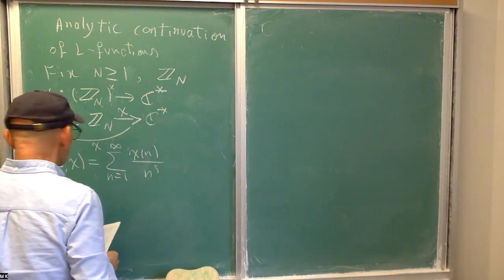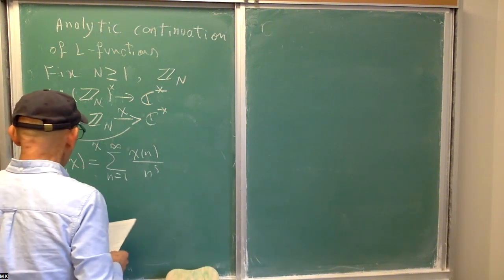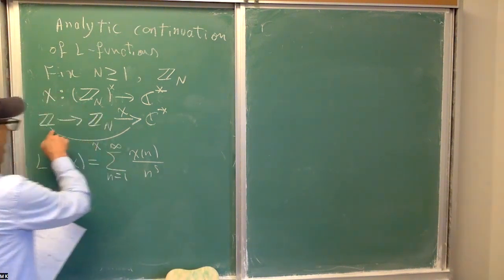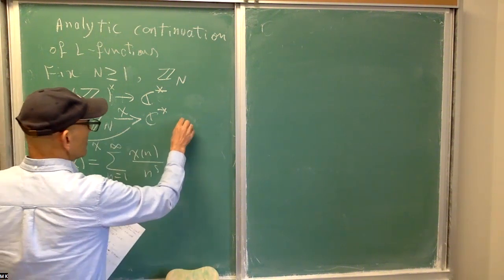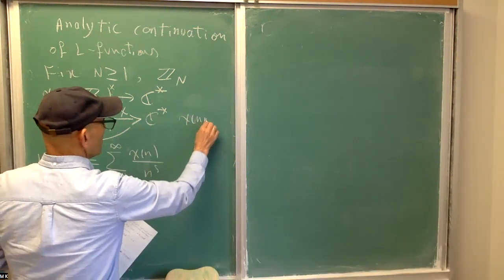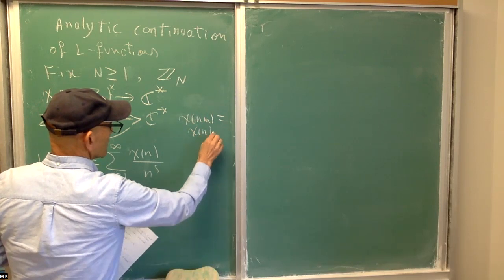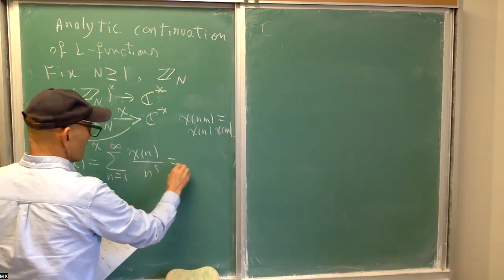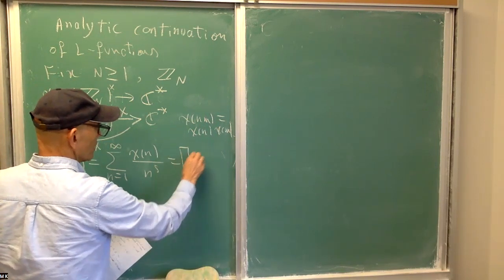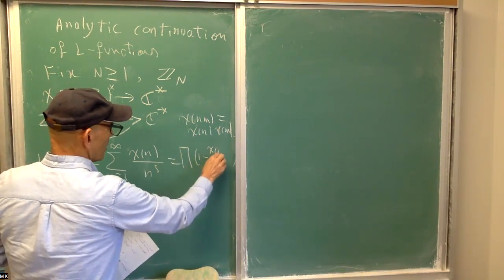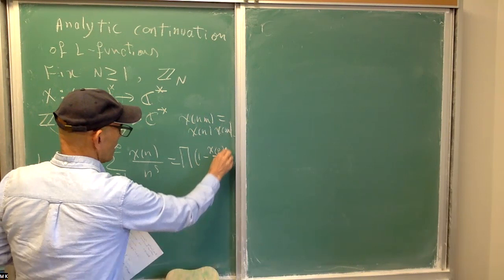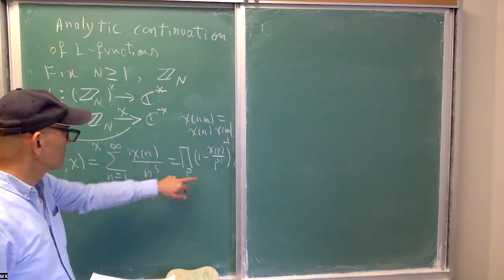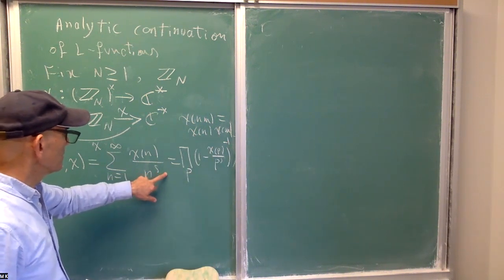This we did a long time ago when we were proving Dirichlet's theorem on primes in arithmetic progressions. Now, chi is fully multiplicative in the sense that chi(nm) equals chi(n)·chi(m). You immediately observe that there is an Euler product formula: the product over primes p of (1 − chi(p)/p^s)^{-1}, similar to Riemann's zeta function.